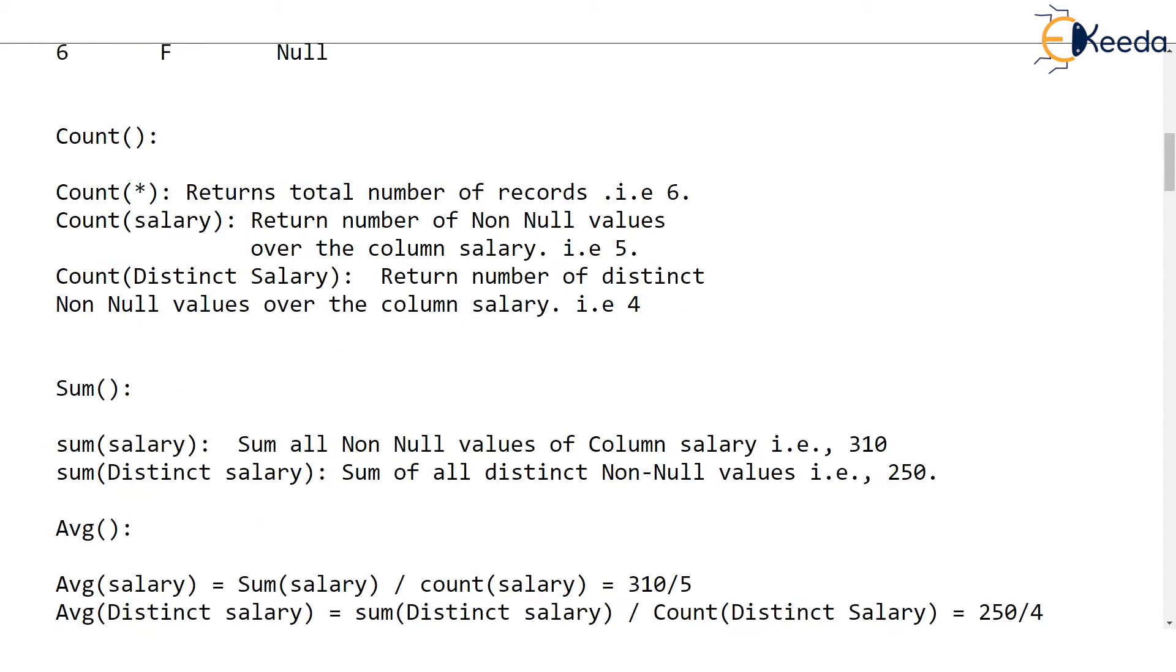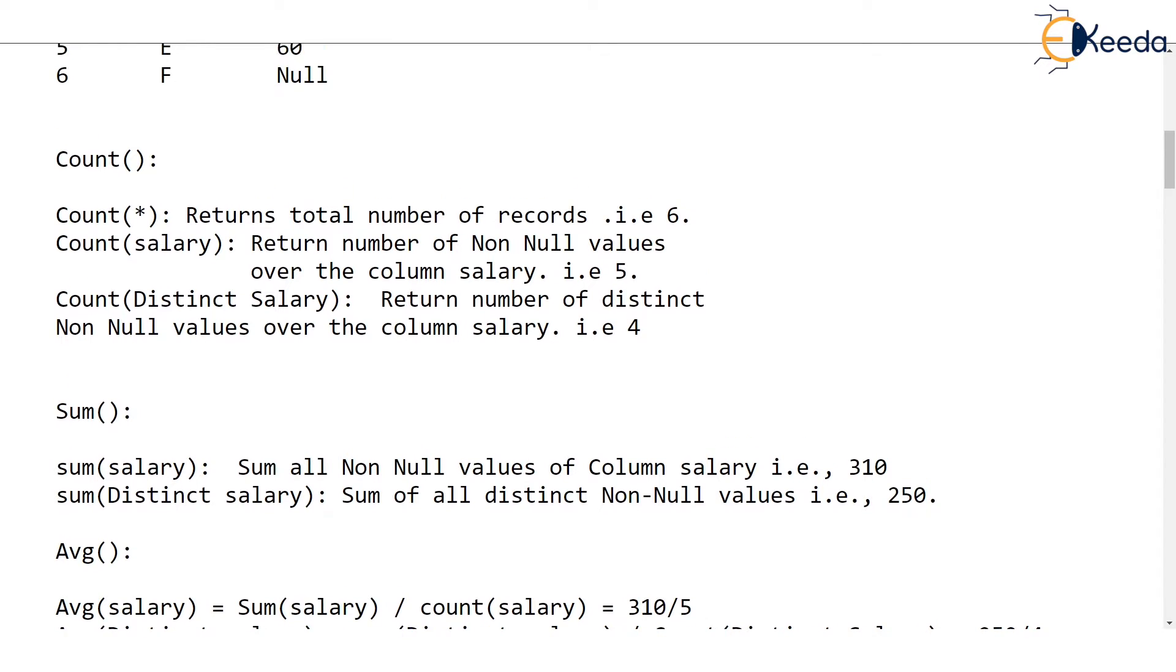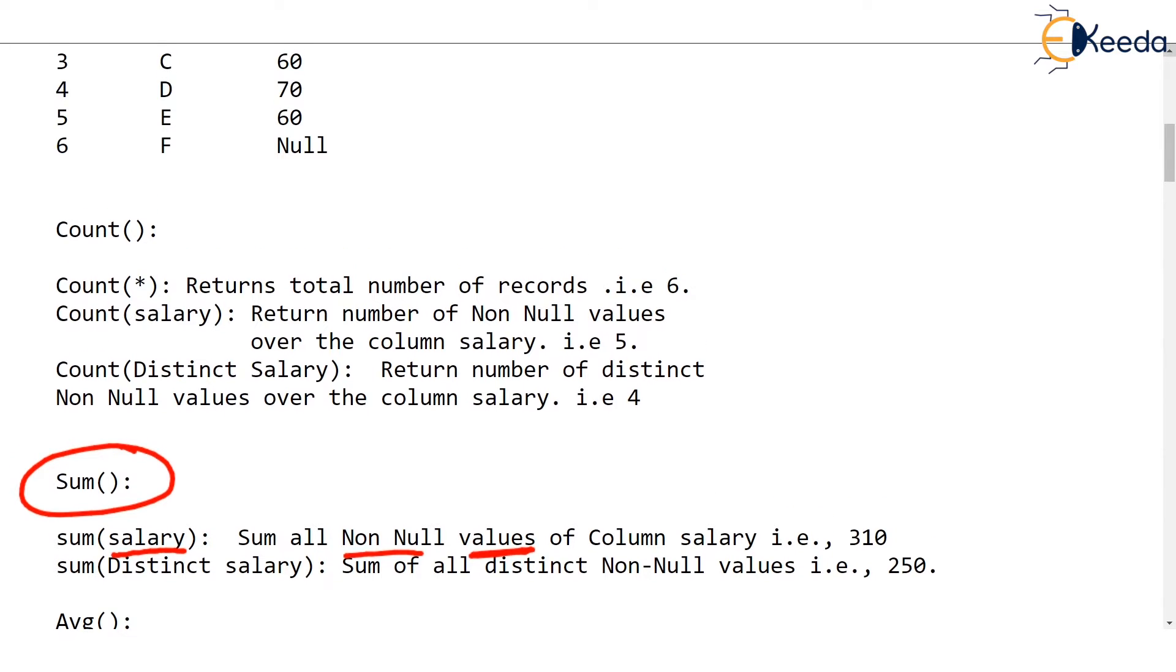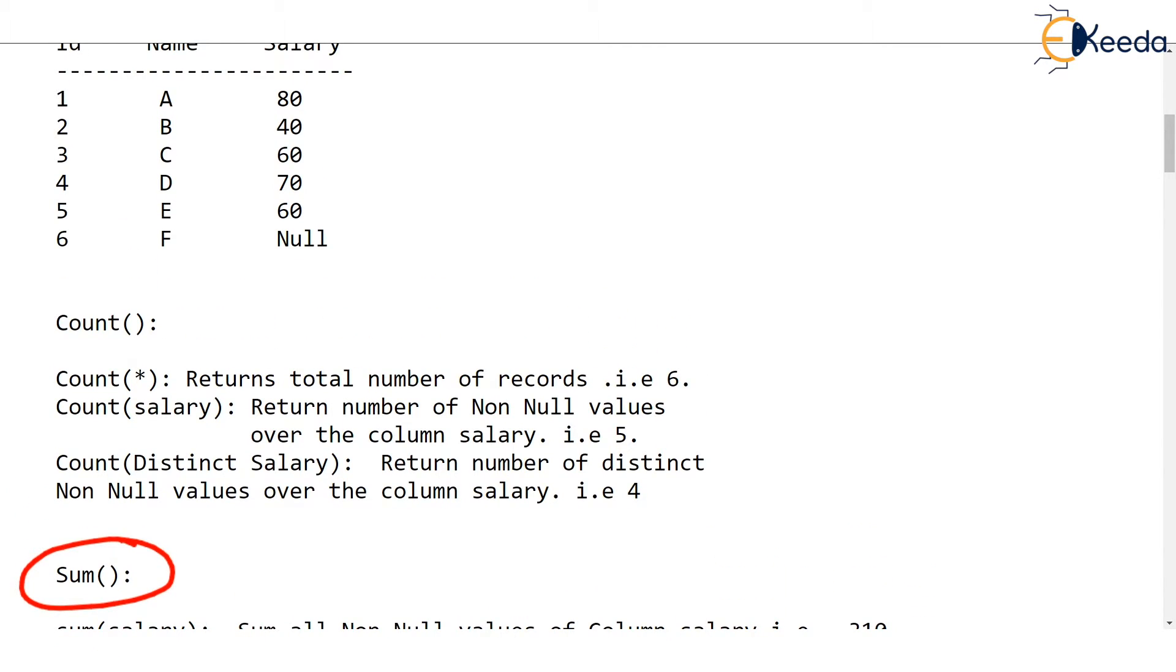The next function is sum. As the name suggests, it will sum up numerical values. Of course, you can use sum only on numerical values, obviously. As an example, if you say sum salary, it will sum all non-null values. If salary is null, it won't consider that. If you execute sum function on this table and say select sum of salary from the table emp, the output is going to be sum of 80, 40, 60, 70, and 60. Null won't be added, obviously.